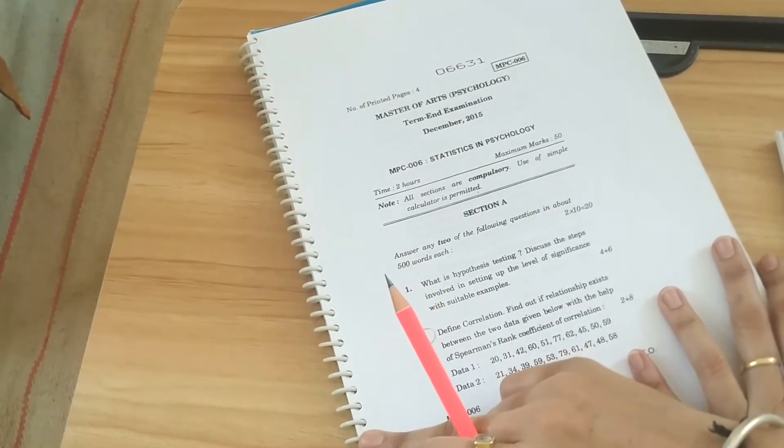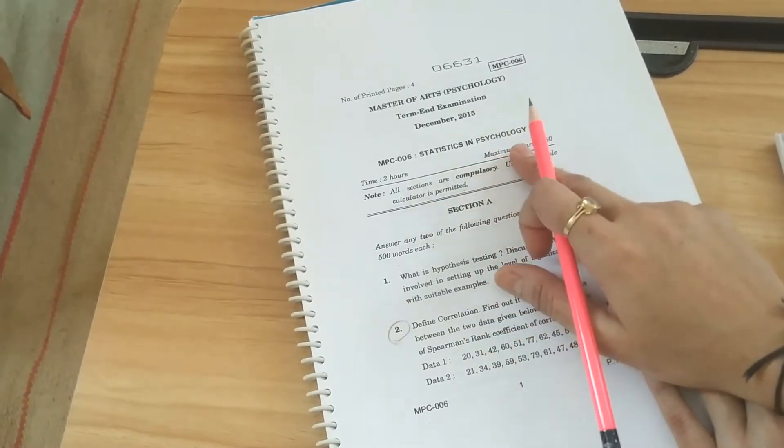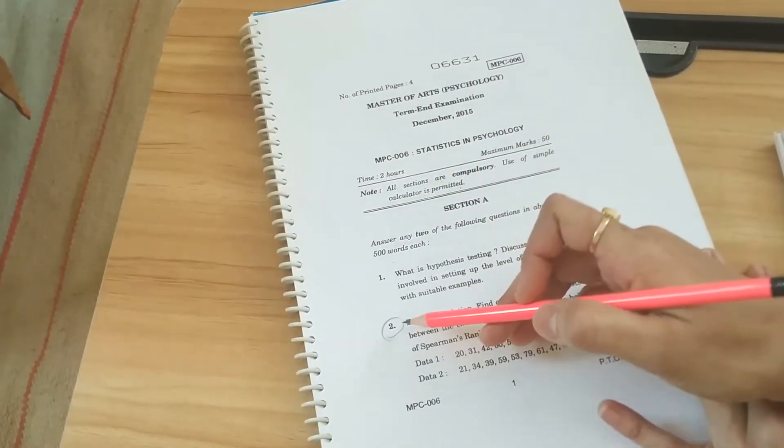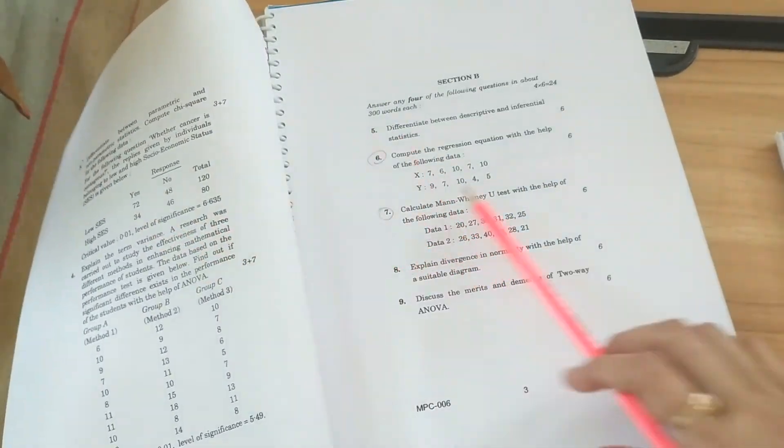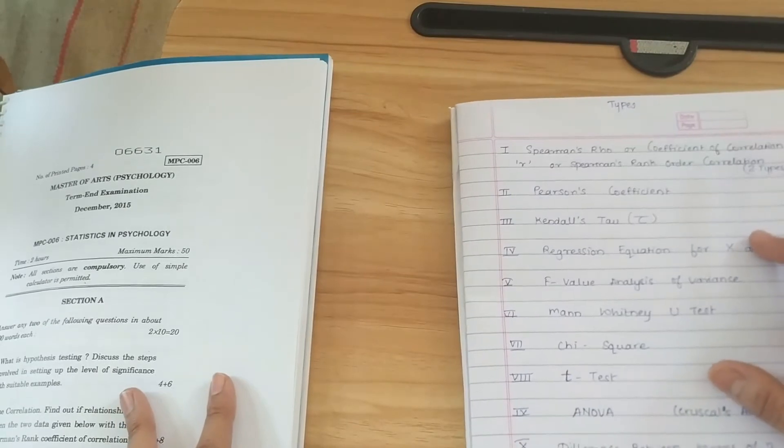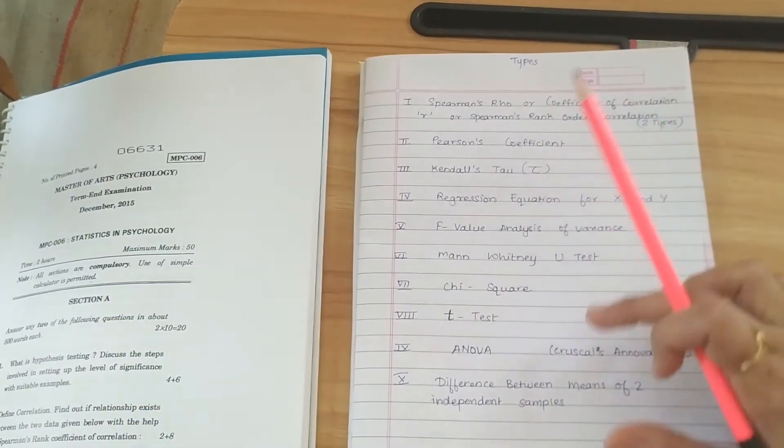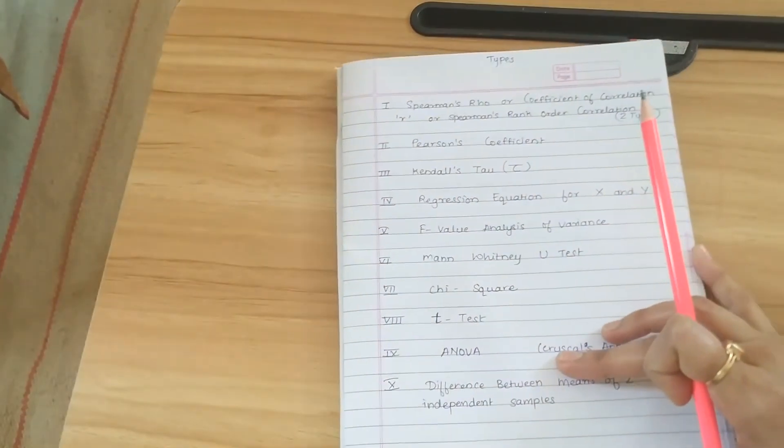I'm referring to the statistics paper. I have circled some of the problems here, you can see. So I have made groups of all the problems that have appeared from 2008 onwards till 2019. These are all the types of problems you can see here.